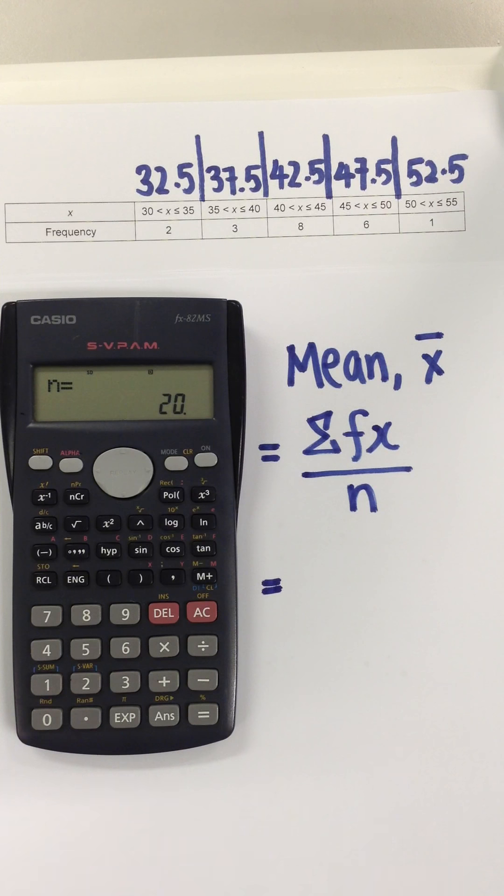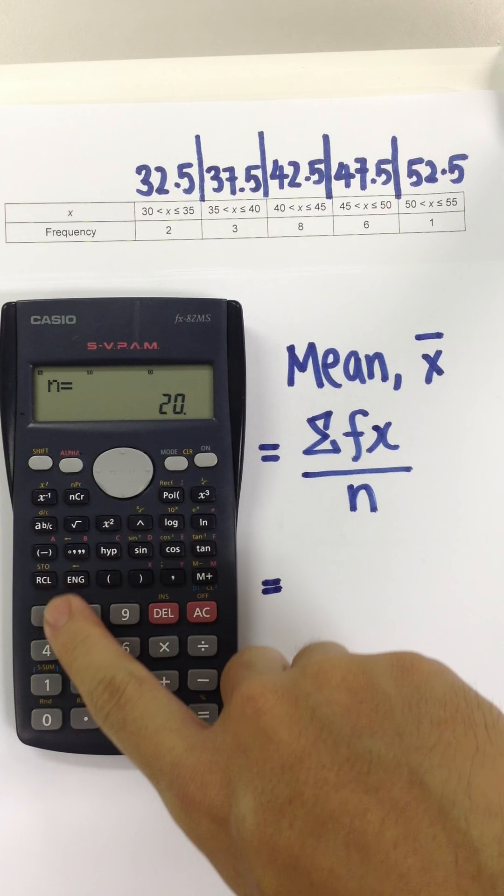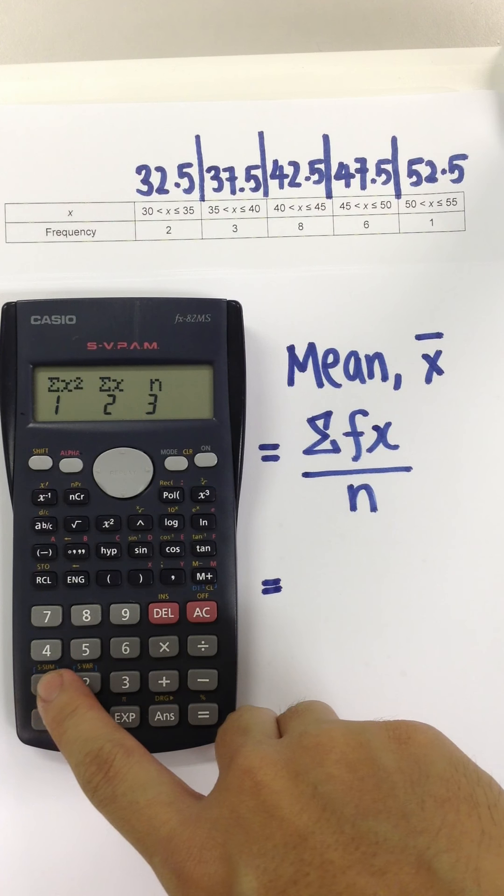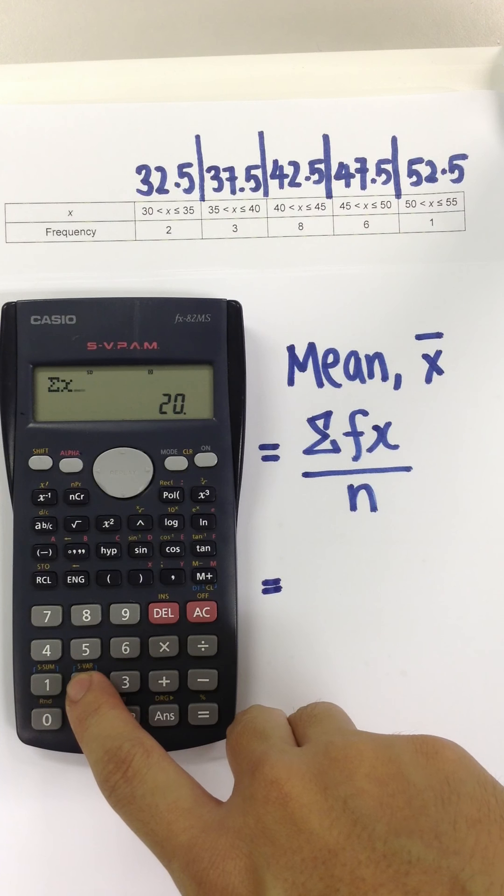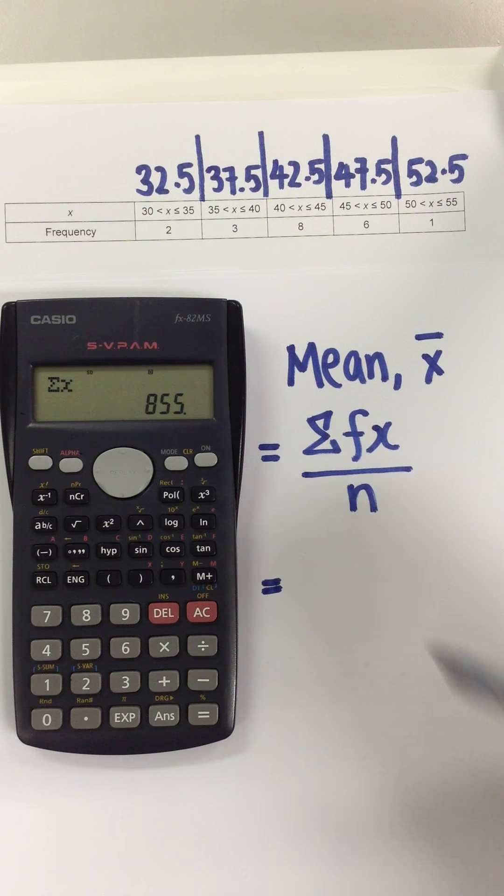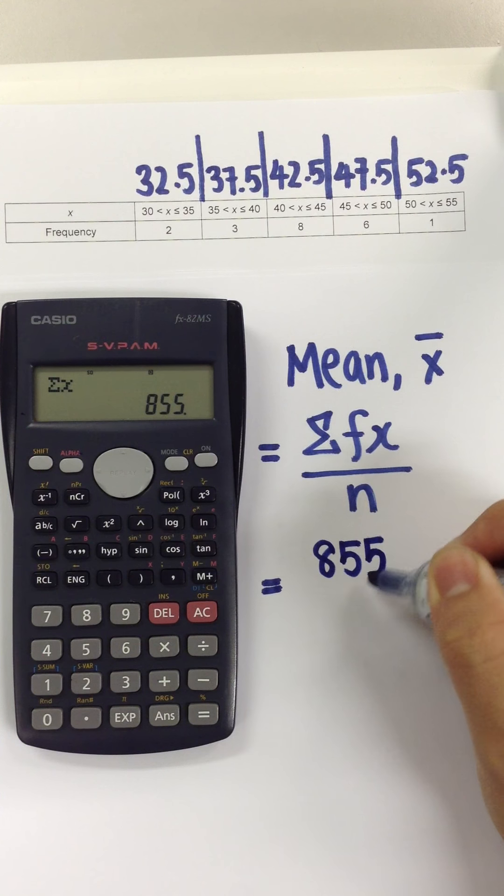Using the calculator, press shift, followed by 1, followed by 2, followed by equal. I will be able to get the value for my summation of fx.